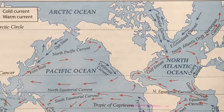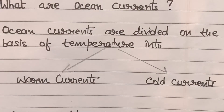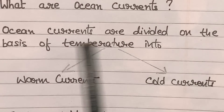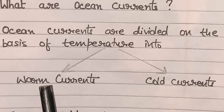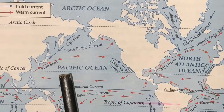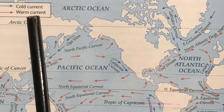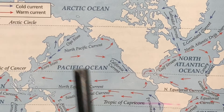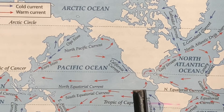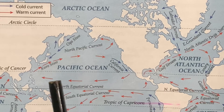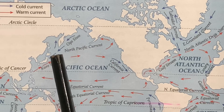This is the ocean current. Now I will explain that ocean currents are divided on the basis of temperature as warm and cold currents. In this diagram you can see warm currents are shown with the help of red arrows. Warm currents flow from